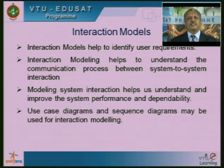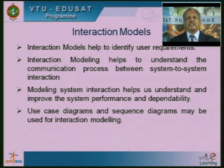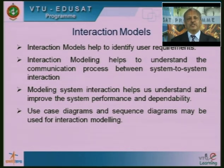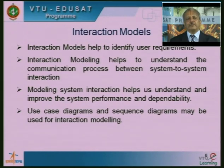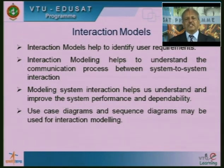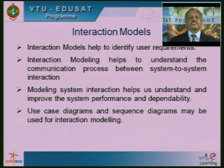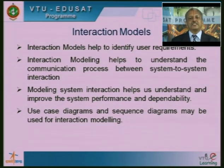This will identify the user requirements in a much better way. Every system is built keeping some purpose in mind or some requirements of the user. When we represent this symbolically or graphically, it will be very clear what is the input to the system, what is expected of the system, and what is the output. Interaction modeling helps to understand the communication process between system to system and system to user interaction. Modeling system interaction helps us understand and improve the system performance and dependability, because interaction models will convey the sequence of operations that take place, and in the process we can make performance and dependability much better and design a better system.